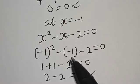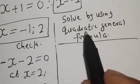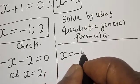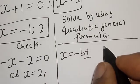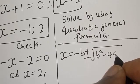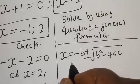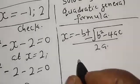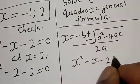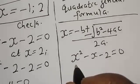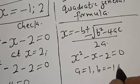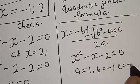That was the factorization method. Now let's solve using the quadratic general formula. The general formula is s equals negative b plus or minus square root of b squared minus 4ac, all over 2a. From s squared minus s minus 2 equals 0, we have a equals 1, b equals minus 1, and c equals minus 2.